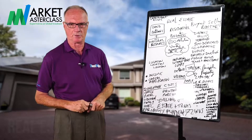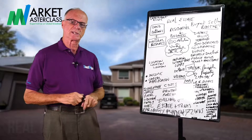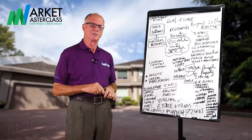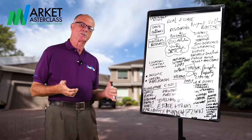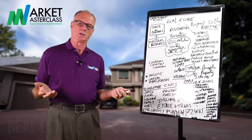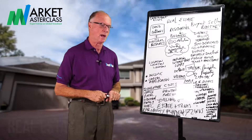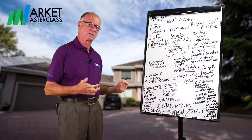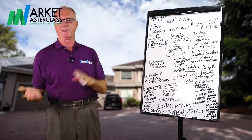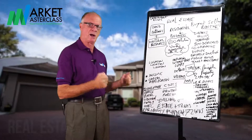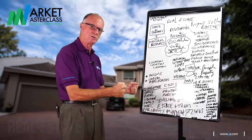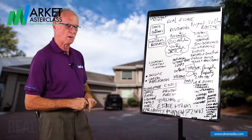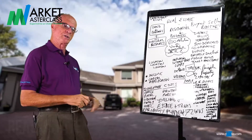Now we all know the basics of real estate. Real estate is buying and selling or renting property. It can be residential property or can be business orientated property. But interestingly, if you get yourself a dictionary on real estate, you'll find articles on 600 different words. It's quite a complex area, so it depends what you want to do.